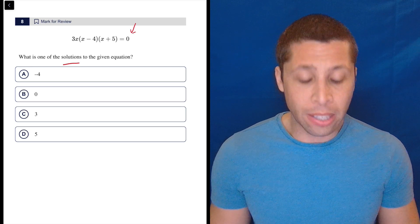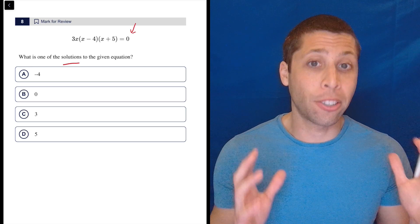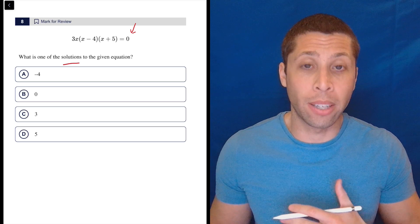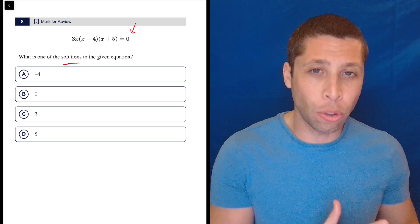But whenever we have things equal to zero like this and we've got these factors, then we don't really need to move anything around. Everything's been moved around for us, and each factor individually is equal to zero.